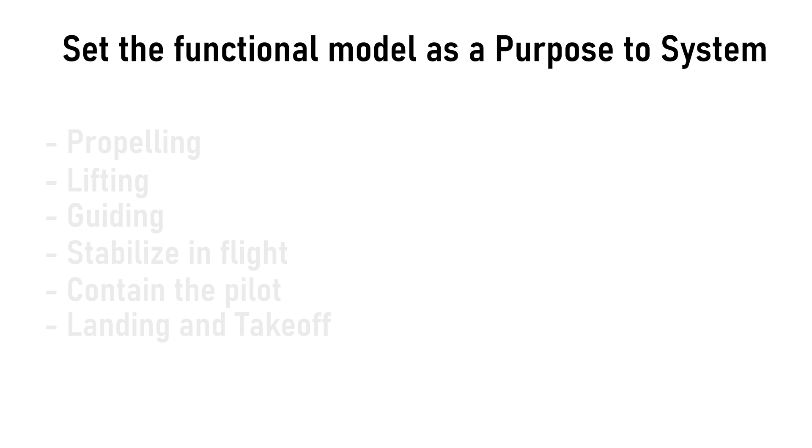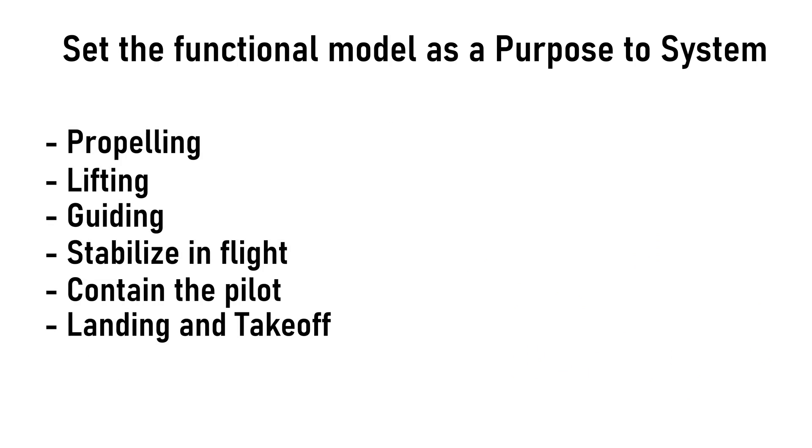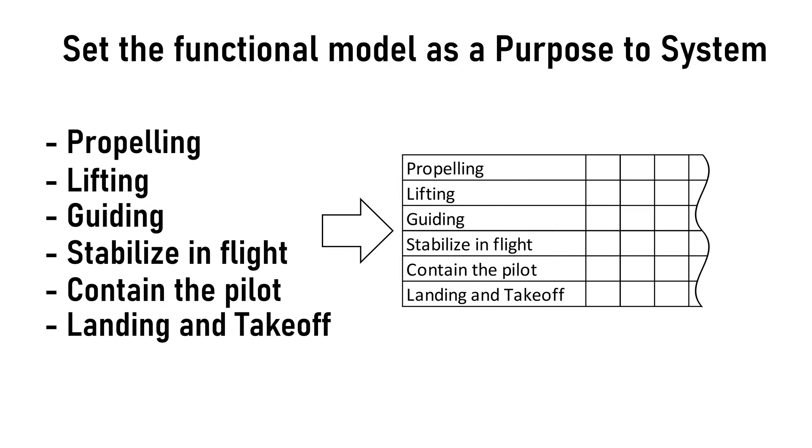This set of functions is actually a functional solution to our initial problem. And as we are not going to reinvent the airplane with our example, we may take this functional model as a purpose to our system. In other words, we will demonstrate that an airplane is one of the possible physical solutions to this functional model. And thus we set the functions as the purpose of our system.